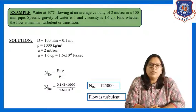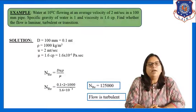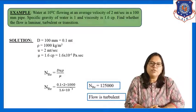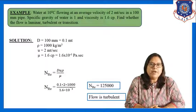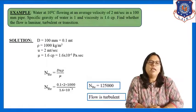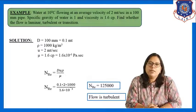See the statement of the example. Water at 10 degrees centigrade flowing at an average velocity of 2 meters per second in a 100 mm pipe. Specific gravity of water is 1 and viscosity is 1.6 Cp. Find whether the flow is laminar, turbulent, or transition.